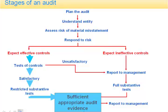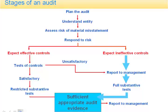It can be filled down the left-hand pipe: we look at the controls, we test the controls, and if those controls are satisfactory, then we don't have to do very many substantive tests — they are restricted. Alternatively, we can go down the right-hand route — another way of filling our requirement for sufficient, appropriate audit evidence. Where there may be ineffective controls, we carry out full substantive tests.